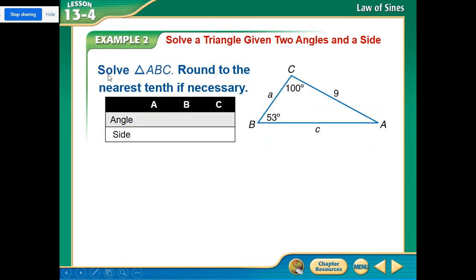All right, so we are going to go ahead and solve triangle ABC. So I've got a little chart here that we're going to fill out. I'm going to want this angle and the sides, and I want A, B, and C. What's the angle for A, and what's the side for A? So angle A, we don't know yet. Side A, we don't know. B is 53. Side B is 9. C is 100. Side C is unknown.